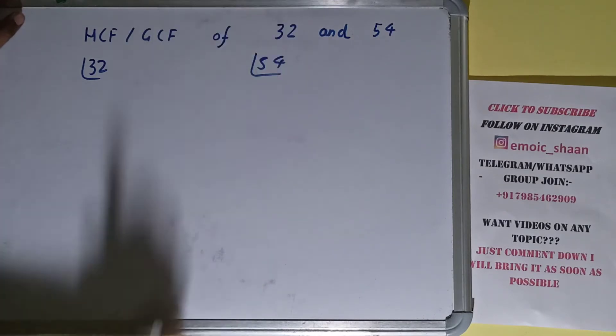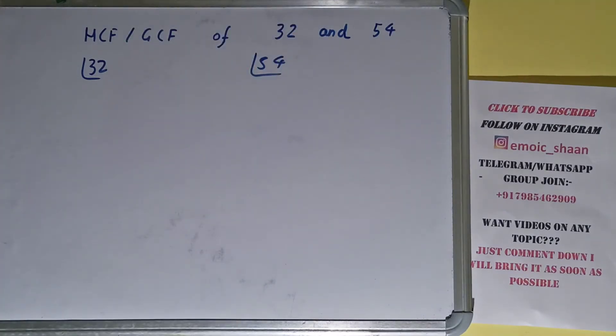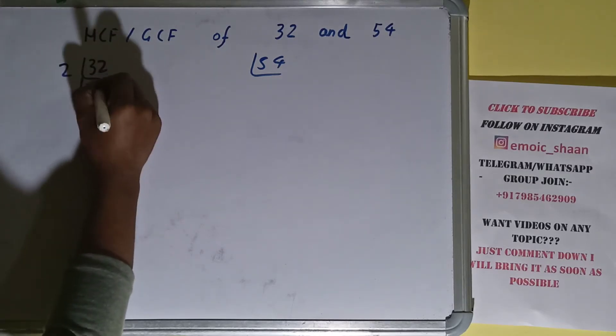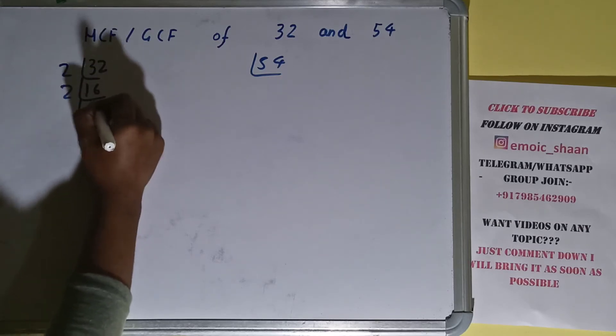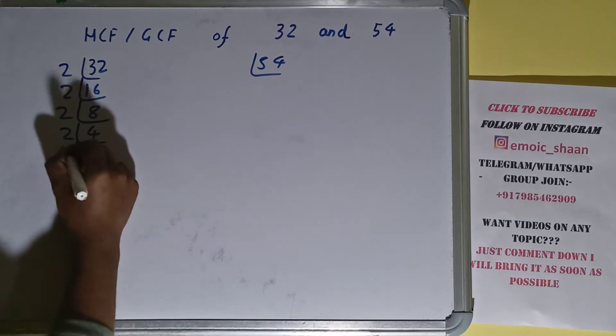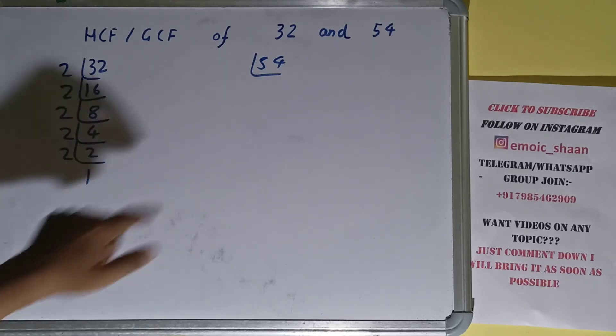I need to prime factorize each of them. So we'll start with the number 32 and check with the lowest prime number, that is 2. Is 32 divisible by 2? Yes, it is. We'll have 16, that is again divisible by 2, we'll have 8. 8 is again divisible by 2, we'll have 4. 4 is again divisible by 2, we'll have 2. 2 is again divisible by 2, we'll have 1. So we are done with this.